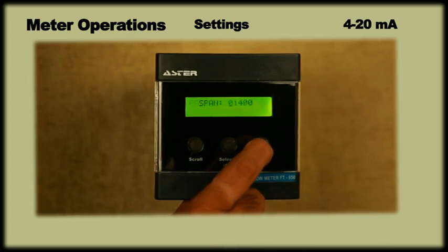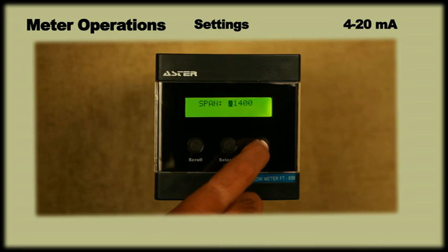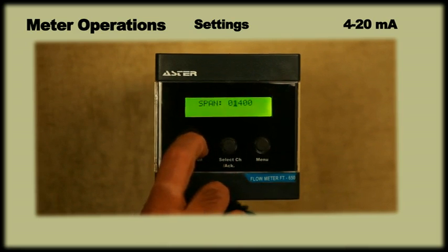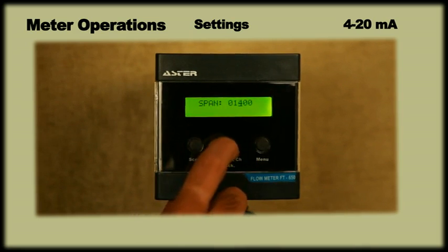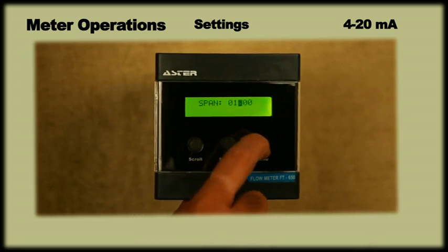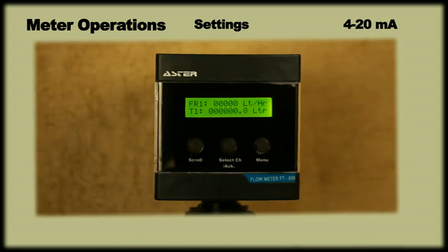Keep pressing menu until it reaches span. Press menu again. Display will show previously set span value. One can change the value using scroll and select ch key. Having changed the span value, press menu to end and save the setting.